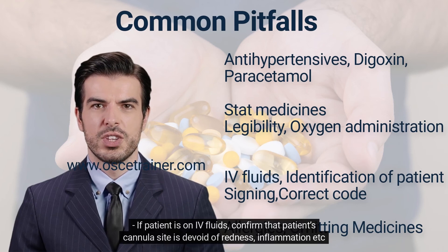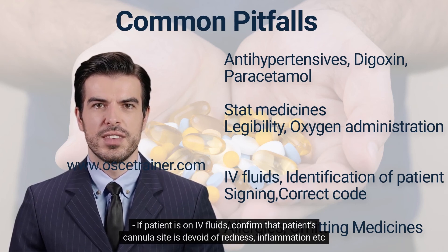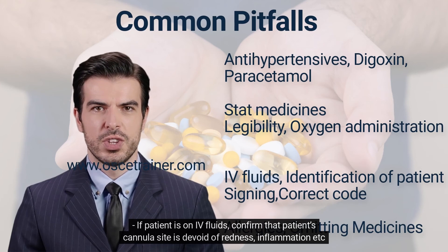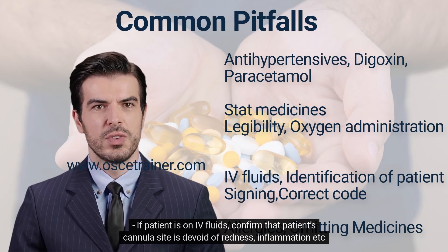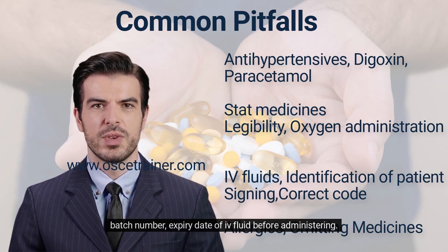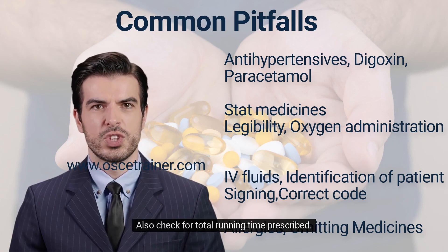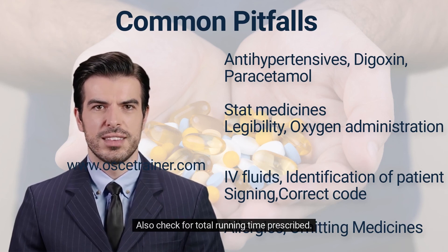If the patient is on IV fluids, confirm that the cannula site is devoid of redness, inflammation, etc., using the VIP score, and check the batch number and expiry date of the fluid before administering. Also check for total running time prescribed.